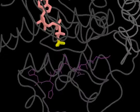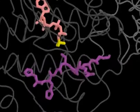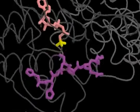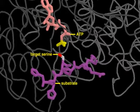Target peptides bind to the active site of the cyclin-CDK complex so that the target serine or threonine side chains are precisely positioned with respect to the gamma phosphate of the bound ATP.